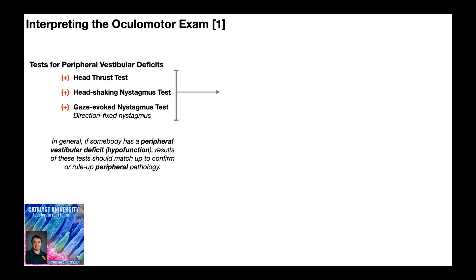So if these tests are all positive, suggesting a peripheral vestibular deficit or hypofunction, what do you do about that? What's your treatment approach? Well in general, the treatment approach is to give an adaptation exercise. And in general, adaptation exercises are gaze stabilization.